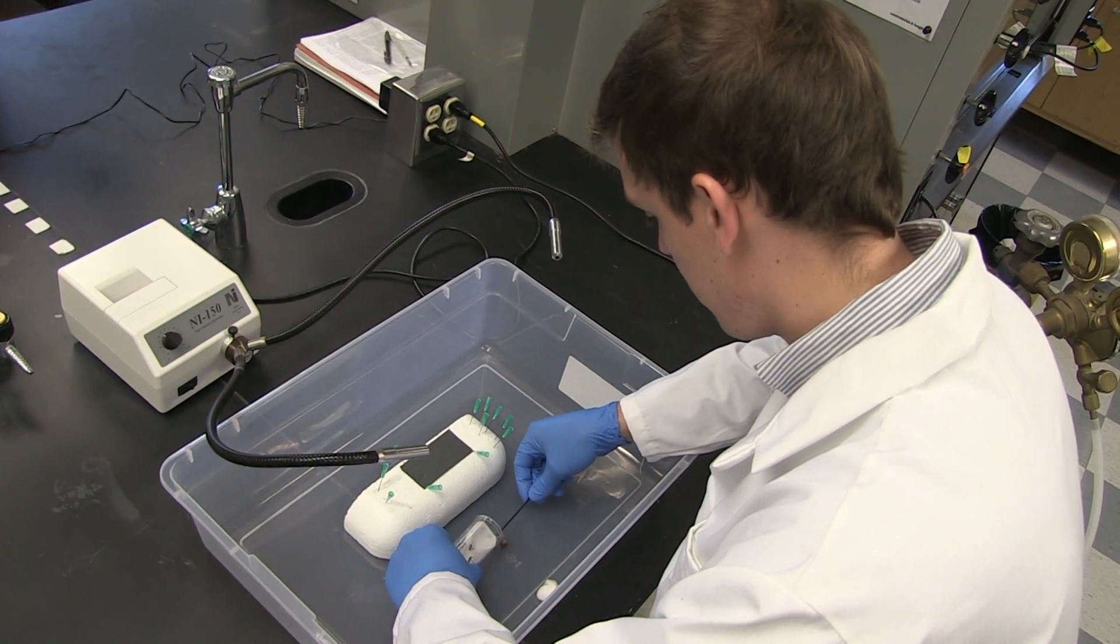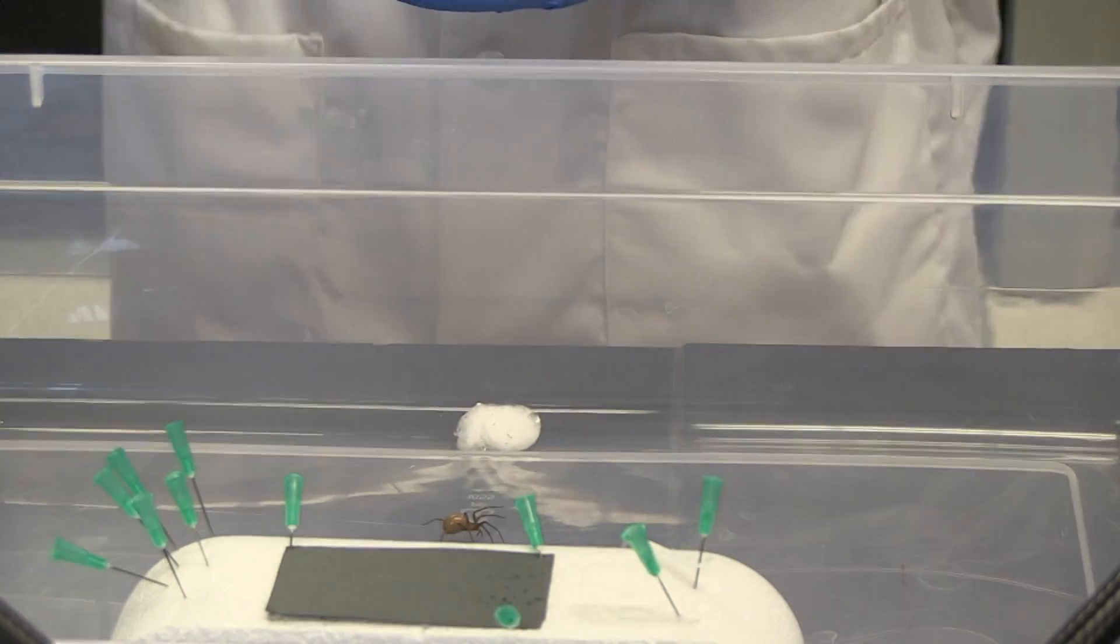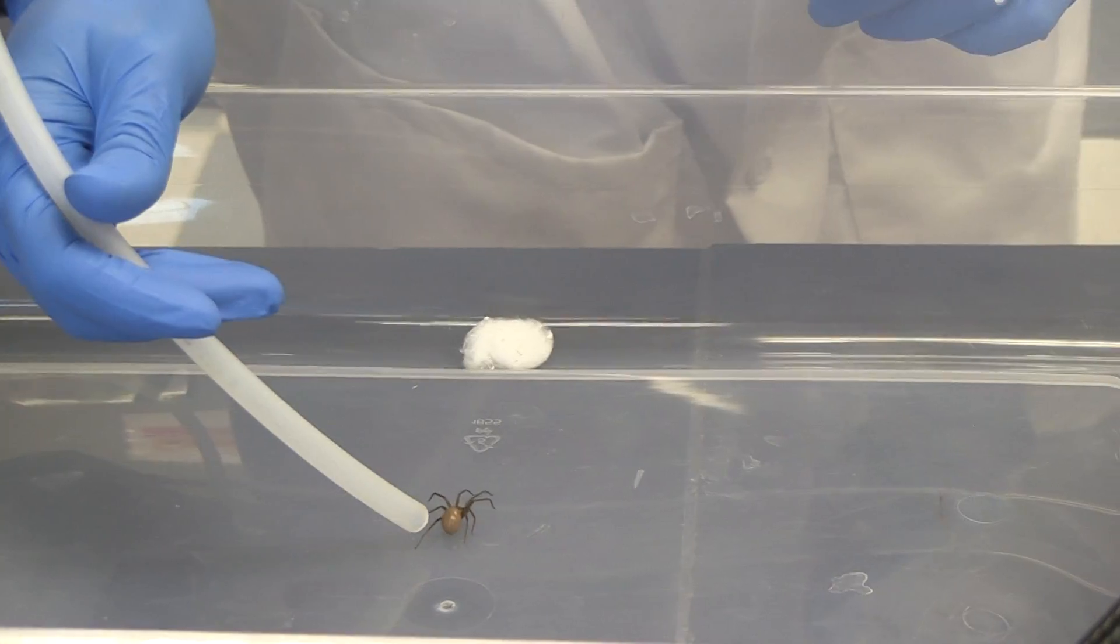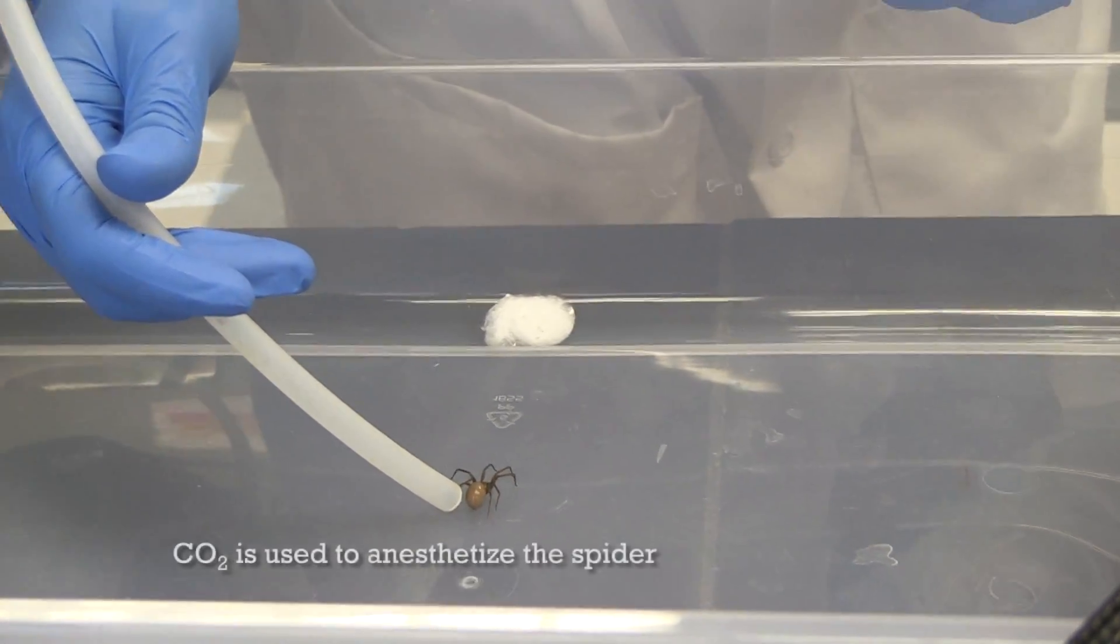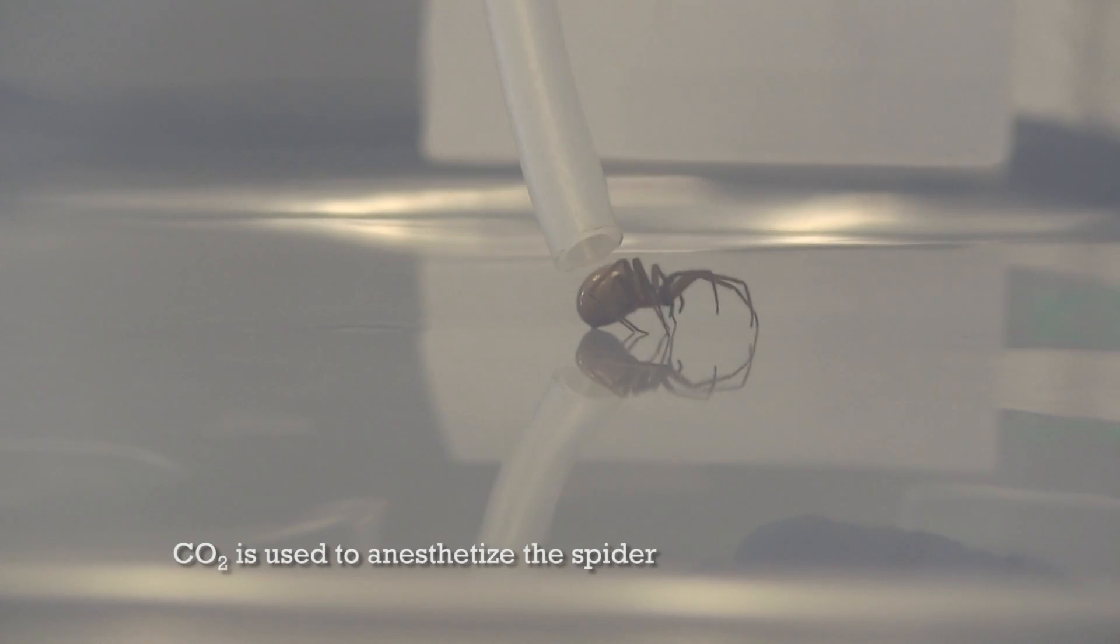Almost all spiders make this round silk, with one exception, and that's the spider that we're studying, the brown recluse spider. That spider makes a flat ribbon. So rather than being round, this is only 50 nanometers thin, which means it's 1,000 times thinner than a human hair. And the width is about a tenth of a human hair.